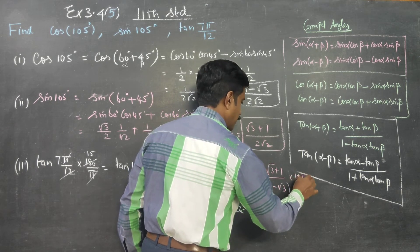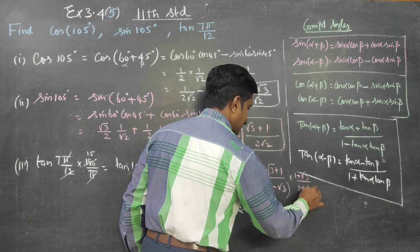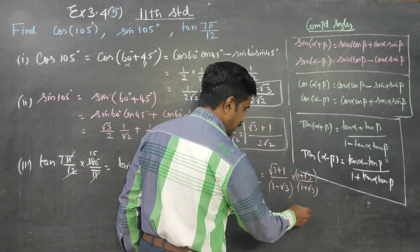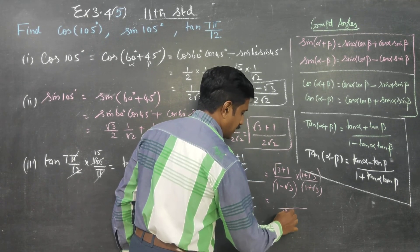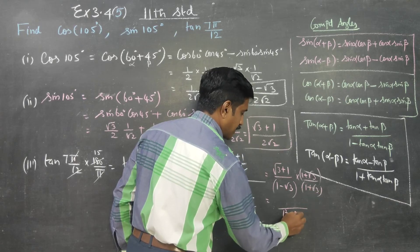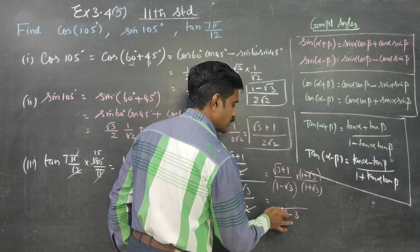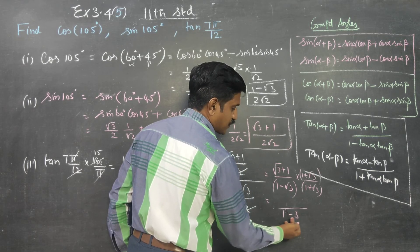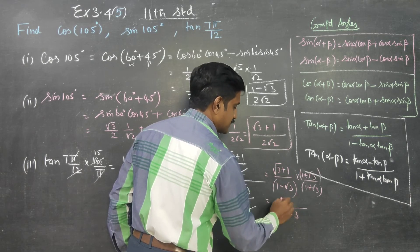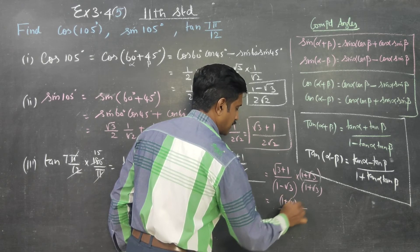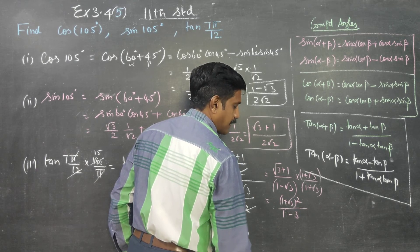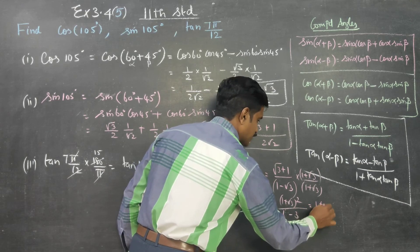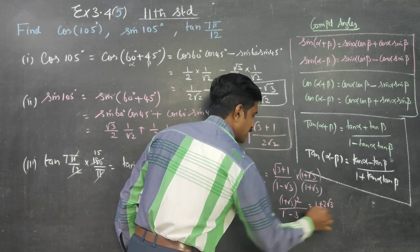To simplify, we rationalize using the conjugate. The conjugate of (1 − √3) is (1 + √3), so multiply numerator and denominator by (1 + √3)/(1 + √3). The denominator becomes a² − b² = 1² − (√3)² = 1 − 3 = −2. The numerator expands as (a + b)² = a² + 2ab + b² = 1 + 2√3 + 3.